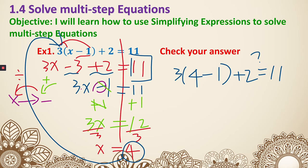Left side, 4 minus 1, that's a 3. So 3 times 3, then plus 2. We still don't know. But 3 times 3 is 9 plus 2. It does actually equal 11. That means we got it right.